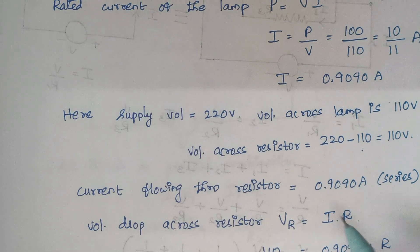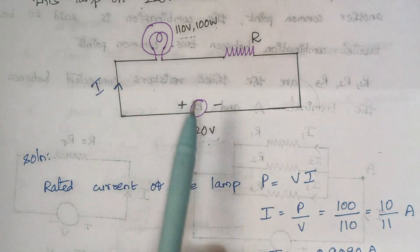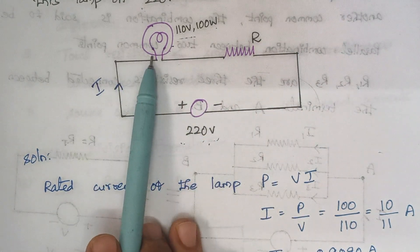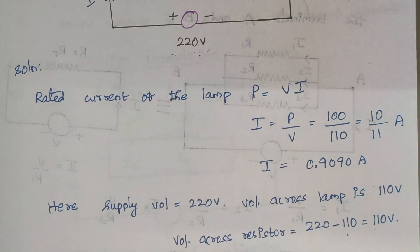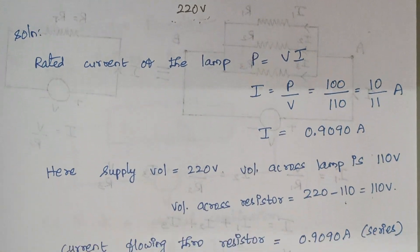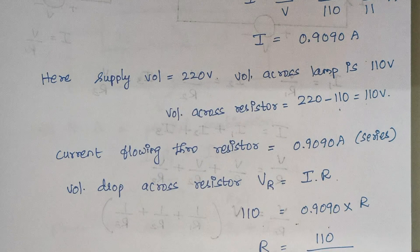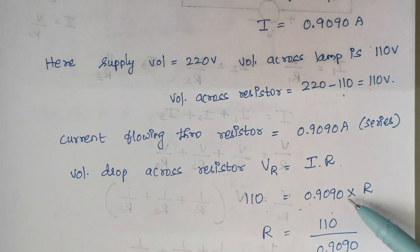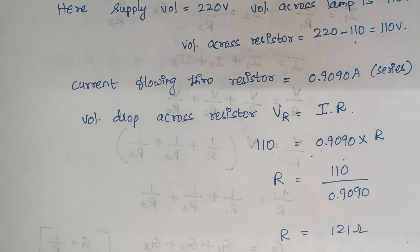Since this is a series circuit, the same current flows through both the lamp and the resistor. Therefore the current is 0.9090 amps. Substituting: 110 = 0.9090 × R, so R = 110 ÷ 0.9090 = 121 ohms. That is the value of resistance to be added.